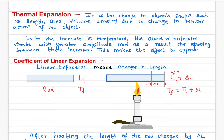What happens when you increase the temperature is that the atoms or molecules inside the material get more energy and vibrate more vigorously. Because they have more energy, they vibrate, and the length of that vibration — what we call the amplitude — increases.